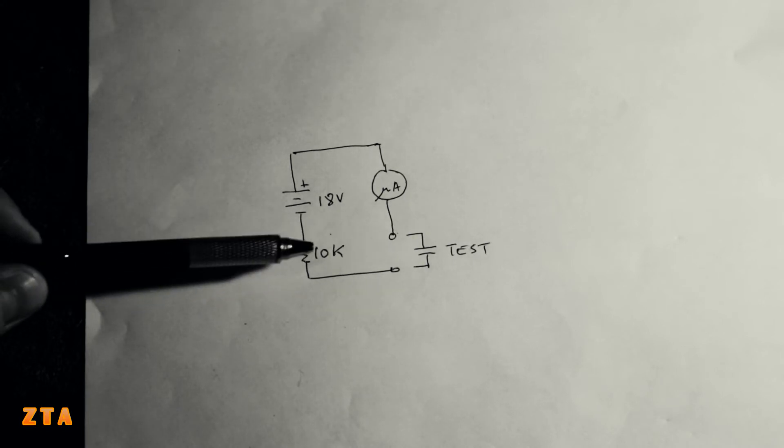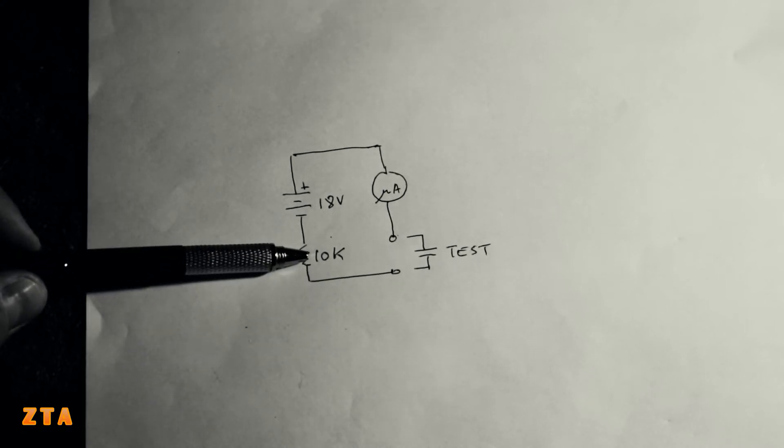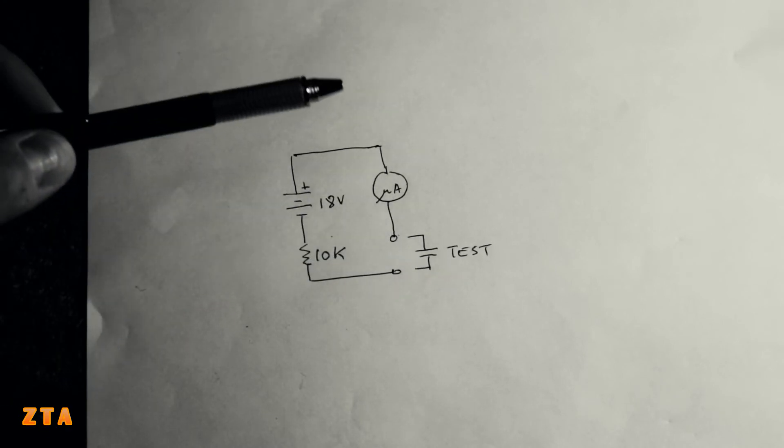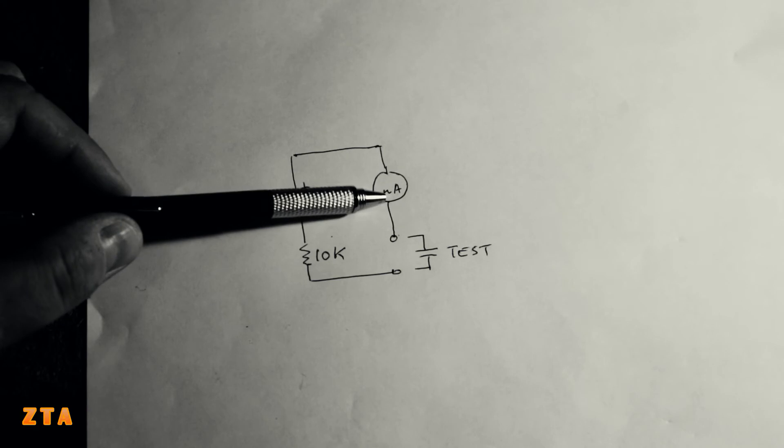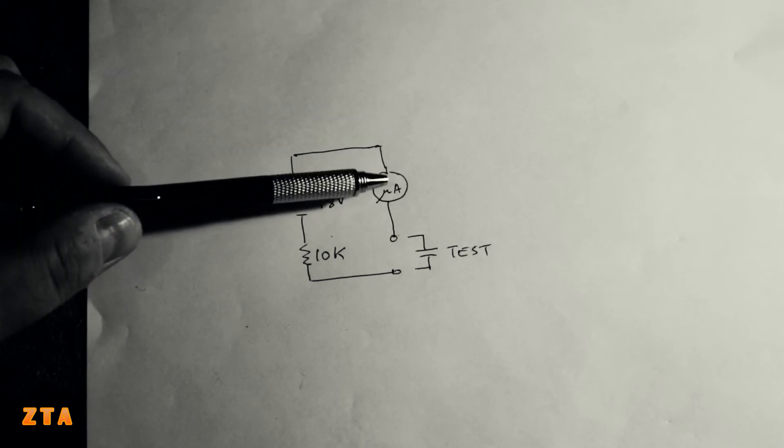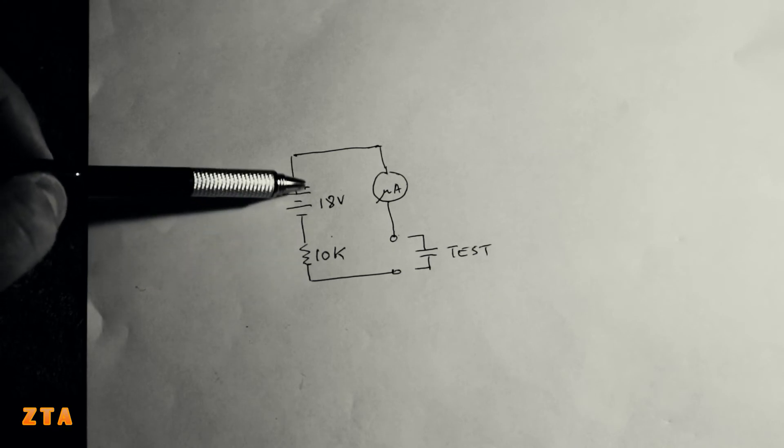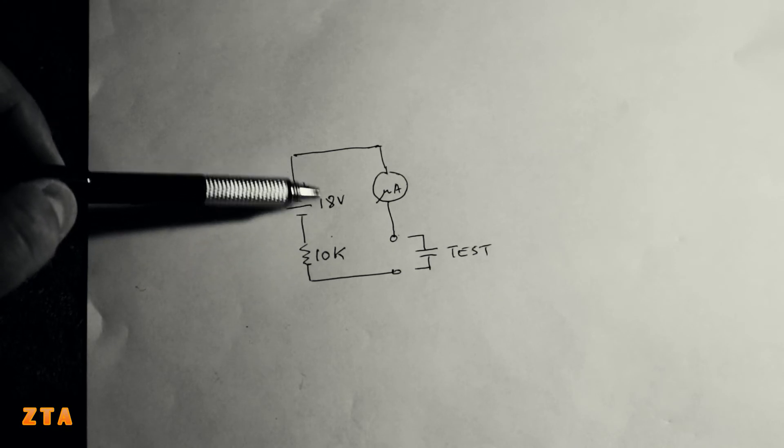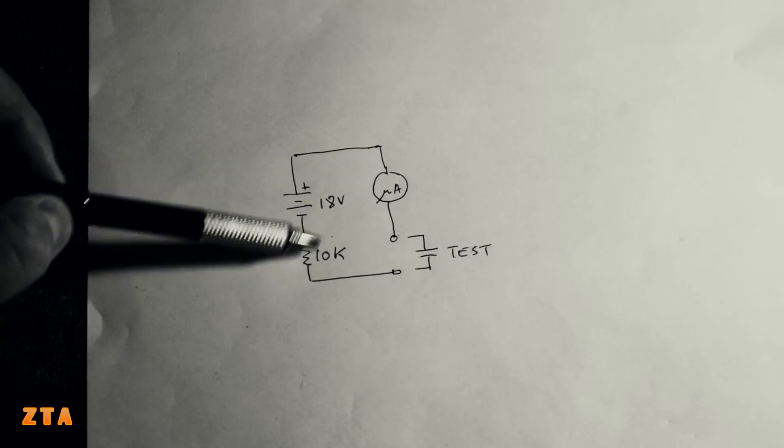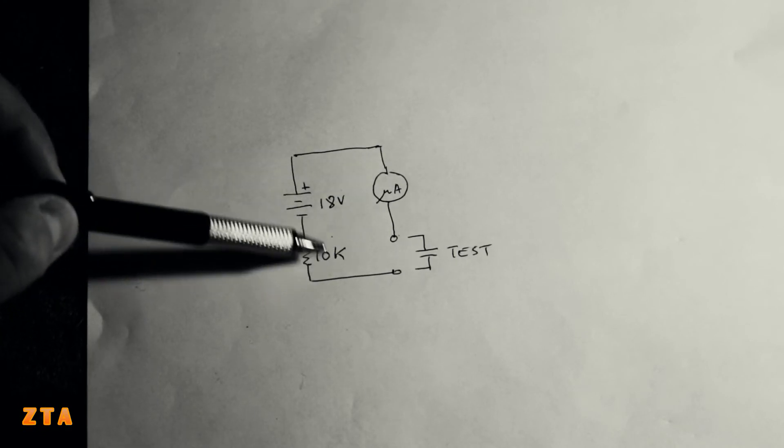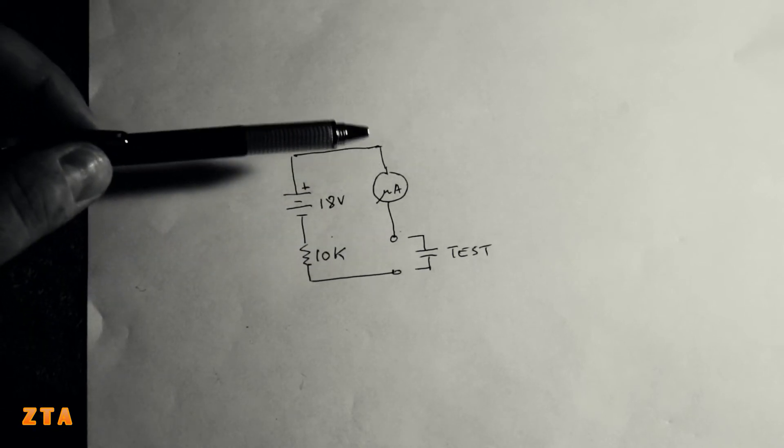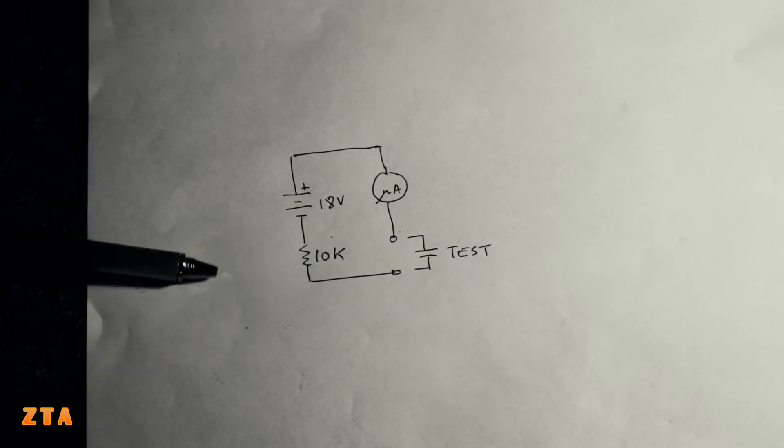The question is, why do you need the 10k resistor? Just to protect the meter in case the capacitor is shorted or near shorted. In a microamp setting, the meter has a fuse in there. Mine has a 400 milliamp fuse. If you don't have that resistor, surely the 18 volt batteries will blow that fuse in the meter. Just protecting that meter and making sure not too much current is going through there.